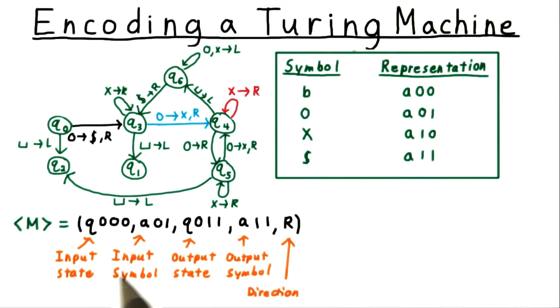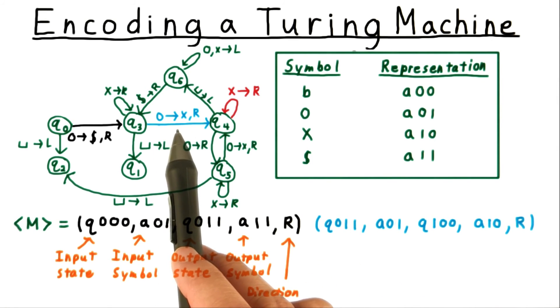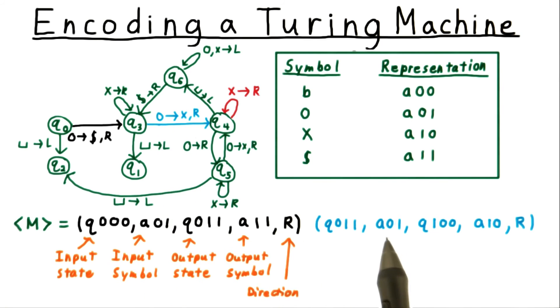Remember that the order is input state, input symbol, output state, output symbol, and then direction. Next, let's do this blue transition here. We go from state 3, and we read a 0, so I'll encode that that way. And then we're going to state 4, so I'll write the encoding for that, with q followed by the binary representation of 4.